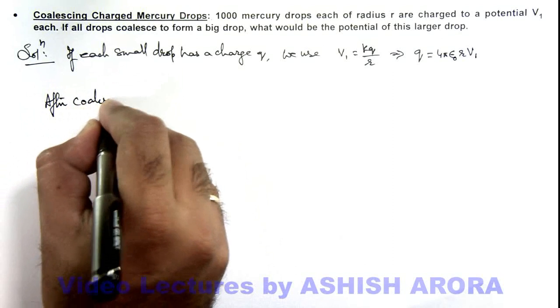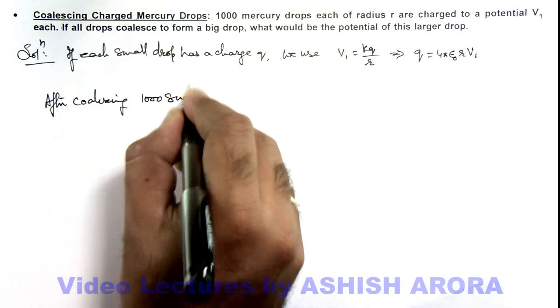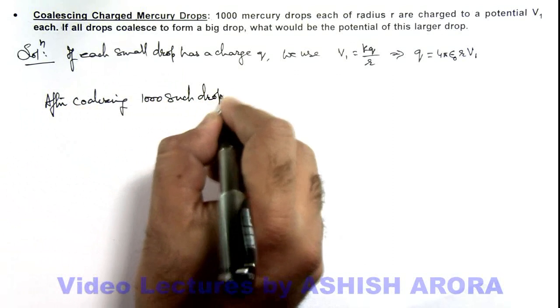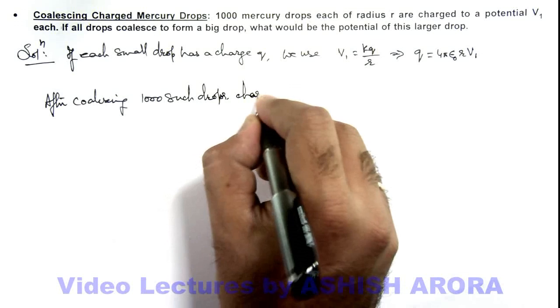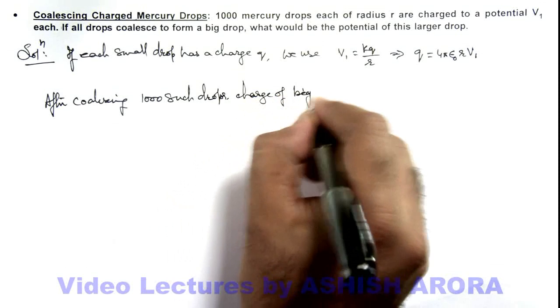Now, after coalescing 1000 such drops, the charge of the bigger drop will be capital Q.